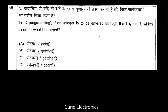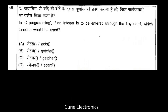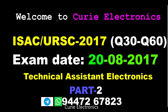Question number 60, the last question: In C programming, if an integer is to be entered through the keyboard, which function would be used? We use scanf. To get formatted data — integer, char, or string — we use scanf. Functions like gets, getchar are for strings and characters. For integers, we use scanf. With this, we complete the 2017 URC question paper. Thanks for watching!